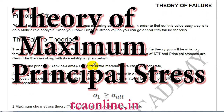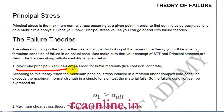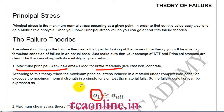The first theory is Maximum Principal Stress. The best part of these theories is that the name itself reflects the theory. In many objective questions it has been asked, so remember that this theory is given by Rankine. It is applicable for brittle material — it gives the best result for brittle materials such as cast iron and concrete.